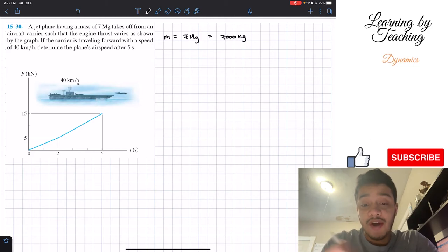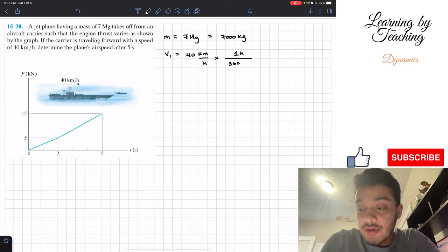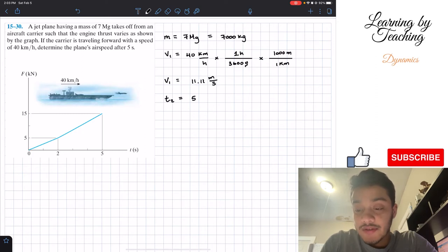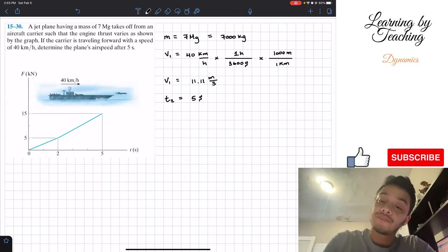Then I'm also given that initially the carrier is traveling forward with a speed of, so initially, at 40 kilometers per hour. And if we convert this into standard units, which are meters per second, we know that in one hour we have 3,600 seconds, and also in one kilometer we get 1,000 meters. When we do that, we have that the initial velocity in meters per second is going to be 11.11 meters per second. I have standardized this mass and the initial velocity, and they're also giving us that the time that we're interested in, the second point time, is 5 seconds.